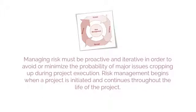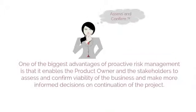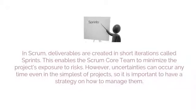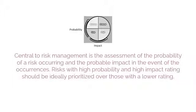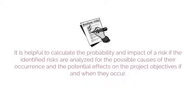Managing risk must be proactive and iterative in order to avoid or minimize the probability of major issues cropping up during project execution. Risk management begins when a project is initiated and continues throughout the life of the project. One of the biggest advantages of proactive risk management is that it enables the product owner and the stakeholders to assess and confirm viability of the business and make more informed decisions on continuation of a project. In Scrum, deliverables are created in short iterations called sprints, which enables the Scrum core team to minimize the project's exposure to risks. Central to risk management is the assessment of the probability of a risk occurring and the probable impact in the event of occurrence. Risks with high probability and high impact rating should be ideally prioritized over those with a lower rating.